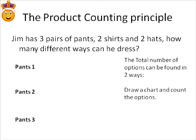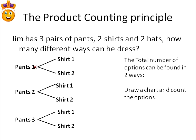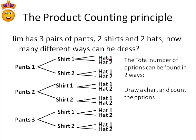The first way to solve this is to draw a chart. We draw pants number one, pants number two, pants number three — let's say brown, black, and white. He would choose his first pair of pants and has two different shirts, so he could pair pants one with either shirt, pants two with either shirt, and pants three with either shirt. After choosing a shirt, he can also choose one of two hats — hat number one or hat number two. To find the total number of options, all we need to do is count the total number in the final column.